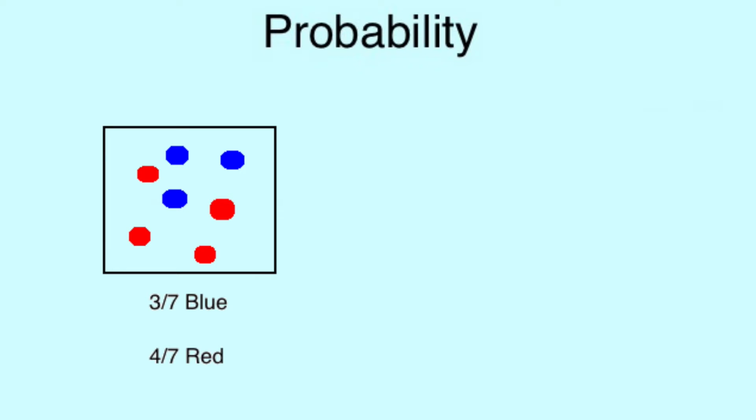For example, if we have a box with 3 blue counters and 4 red, then the chances of getting a blue counter are 3 out of 7, and the chances of getting a red are 4 out of 7.